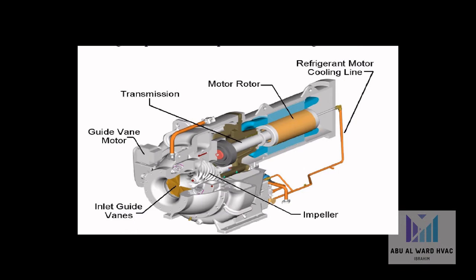Centrifugal compressors use dynamic compression: refrigerant molecules are flung outward by centrifugal force, and new ones are drawn in to replace them. This continuously compresses a stream of refrigerant gas and allows large volumes to be compressed, resulting in a relatively compact-sized chiller. Centrifugal compressors dominate in larger capacities.